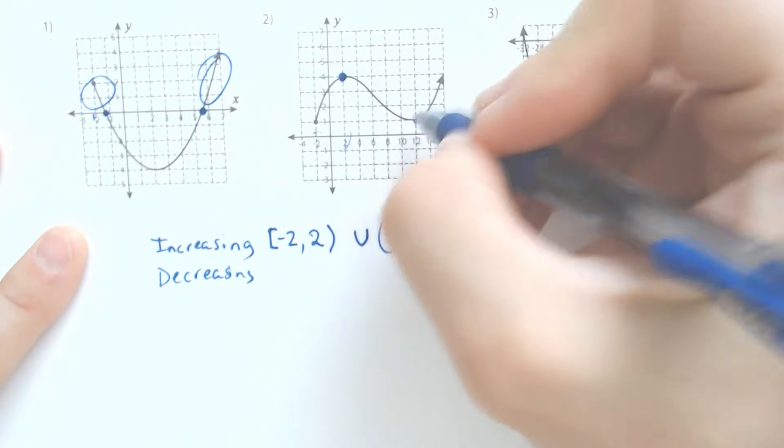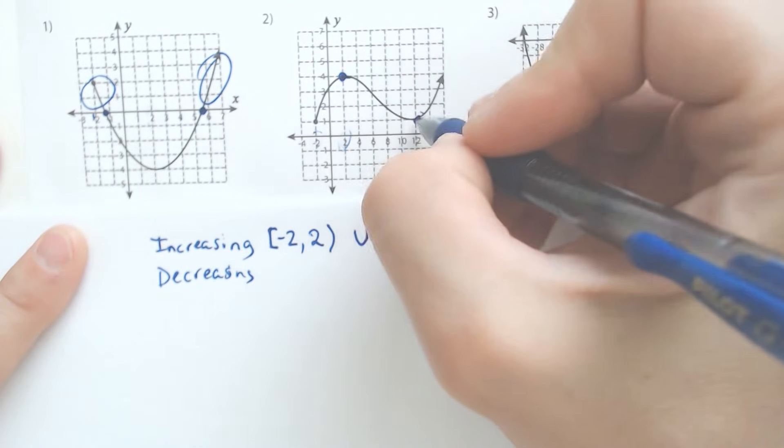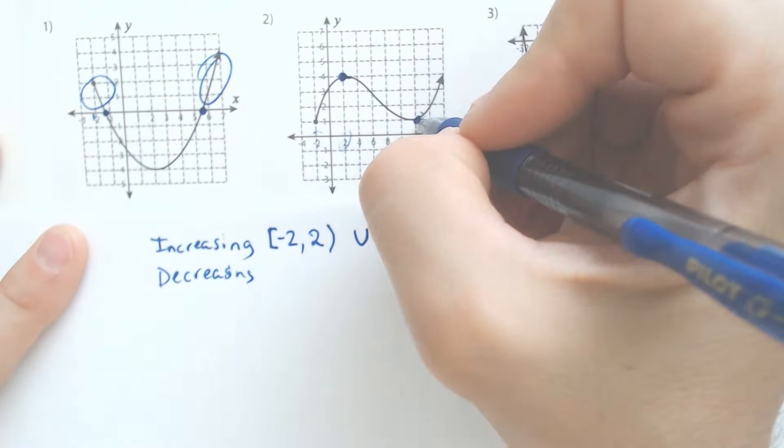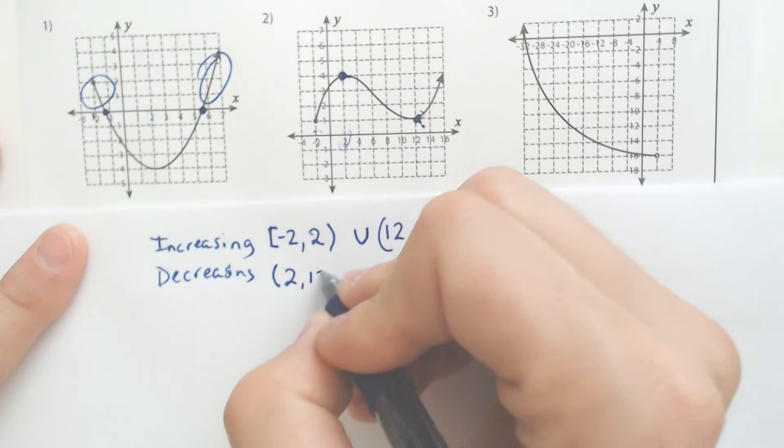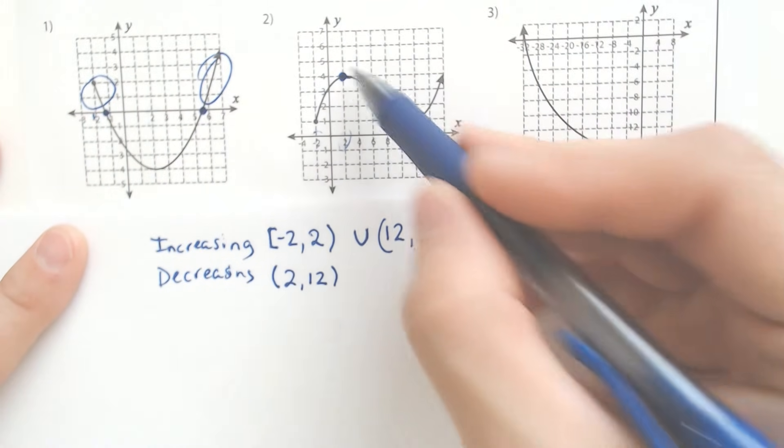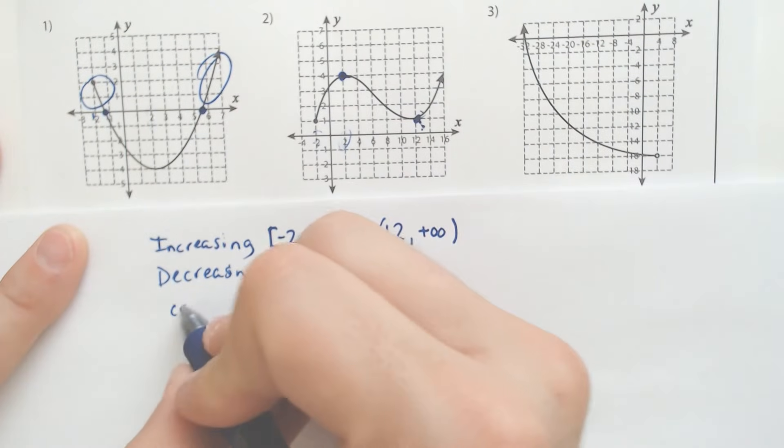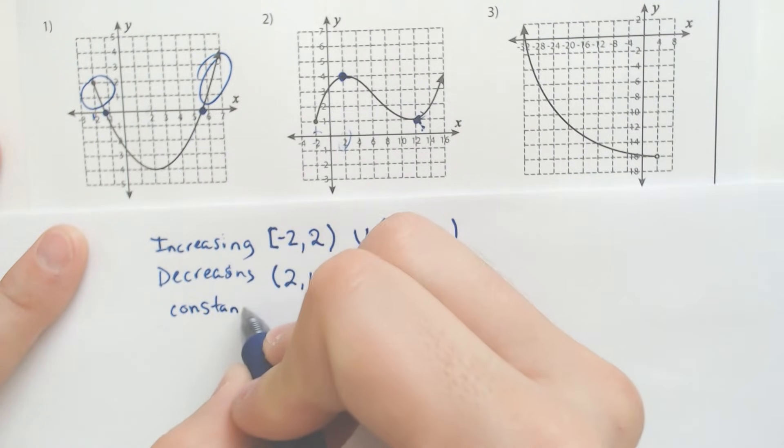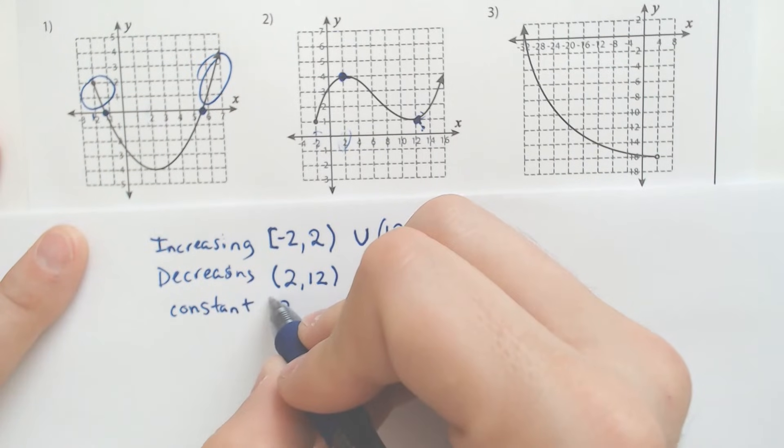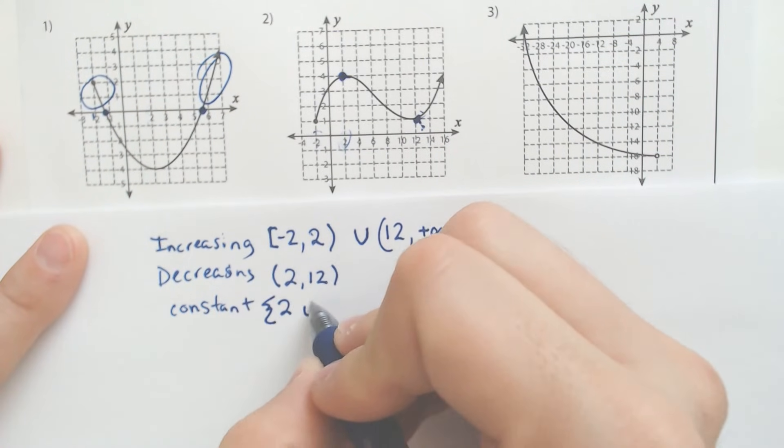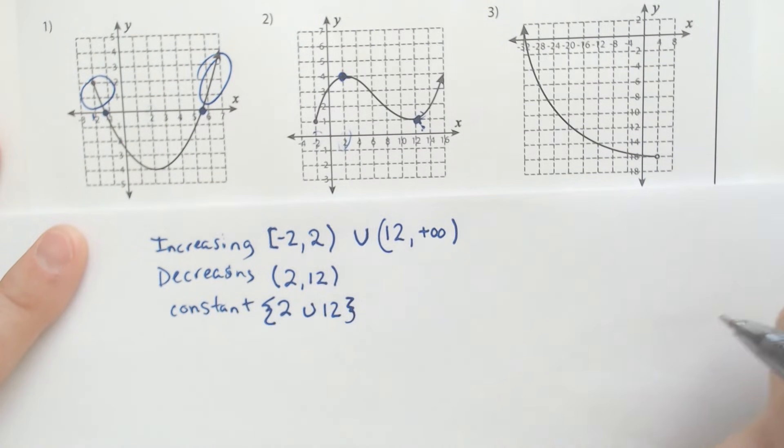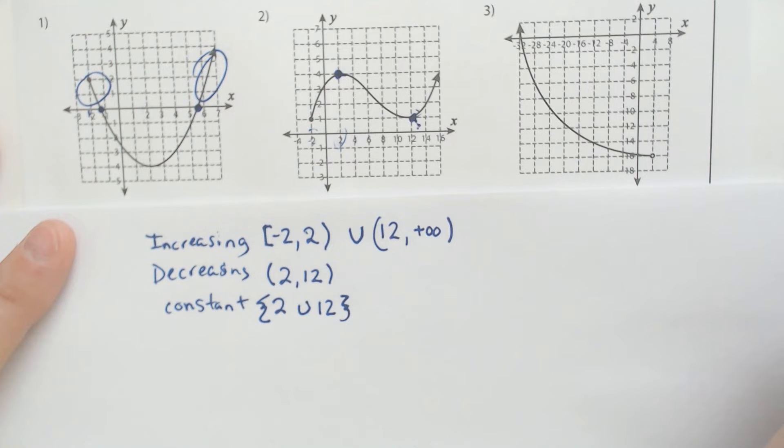What about decreasing? Well, we only have one little spat where we're decreasing here, and that was from here to here from two to 12. So not including two, not including 12, because at the two and the 12, you could say it's constant. So sometimes you might have to say constant, which would be at two, and they might do it as like the set notation and 12 where it's neither going up nor down.